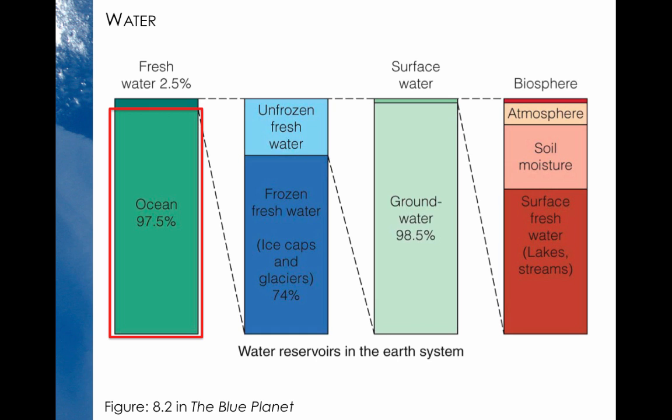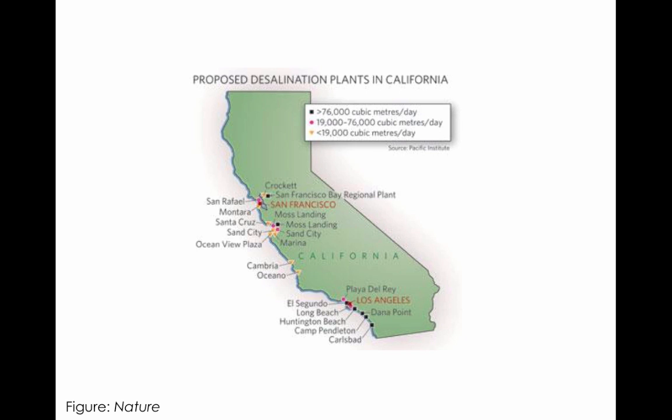Pause the video and write this down, then restart the video. Because this water is salty, we can't really use it for watering or drinking. Desalination can be used to produce fresh water from salt water in very dry places, and it's being discussed more seriously as a source of drinking water in places like California, Australia, and the Middle East.